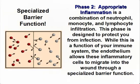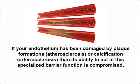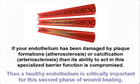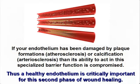Phase two, appropriate inflammation, is a combination of neutrophil, monocyte, and lymphocyte infiltration. This phase is designed to protect you from infection. While this is a function of your immune system, the endothelium allows these inflammatory cells to migrate into the wound through specialized barrier function. If your endothelium has been damaged by plaque formations, atherosclerosis, or calcification, arteriosclerosis, then its ability to act in this specialized barrier function is compromised. Thus, a healthy endothelium is critically important for this second phase of wound healing.